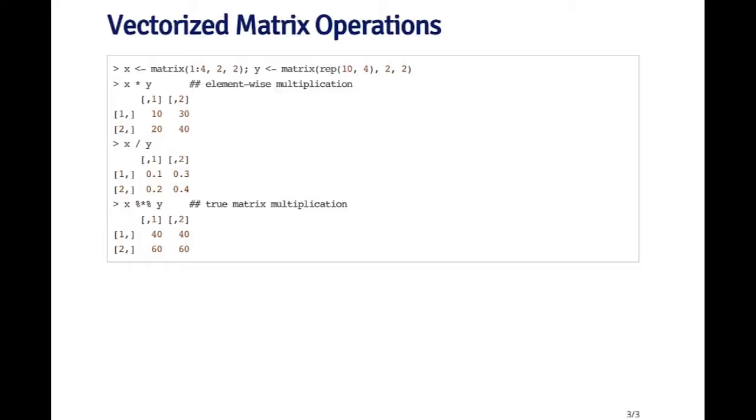If I just do x times y, this is not a matrix multiplication—this is an element-wise multiplication. The (1,1) element of x is multiplied by the (1,1) element of y, and the (2,2) element is multiplied by the (2,2) element of the other matrix, and so on. Each element is multiplied together in parallel. Same when you do division—this is not a matrix inverse or anything like that. This is just dividing one matrix element by element by another.